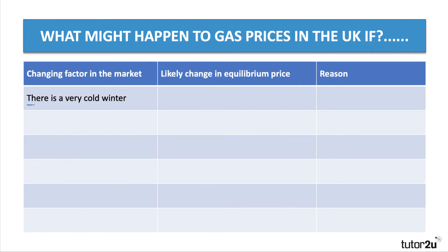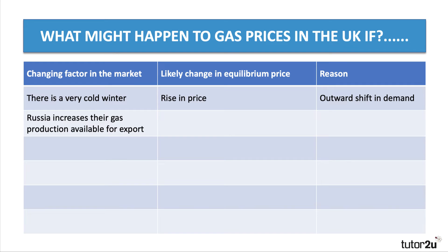Factor one: a very cold winter. That would normally cause a rise in the price of gas because there's an outward shift of demand for gas to heat homes and business premises. A very cold winter typically pushes gas prices up. Conversely, if the winter is mild, demand will be lower and prices would fall. Factor two: Russia increases gas production available for export. The likely price change would be a fall in price, because this decision causes an outward shift of the supply curve — more gas is made available at each and every price.